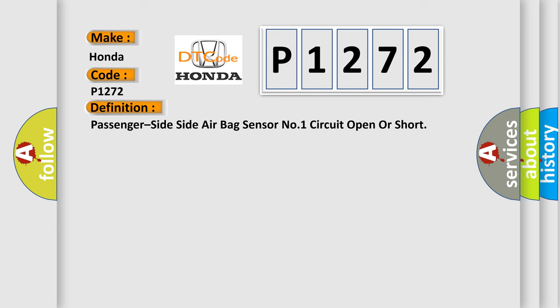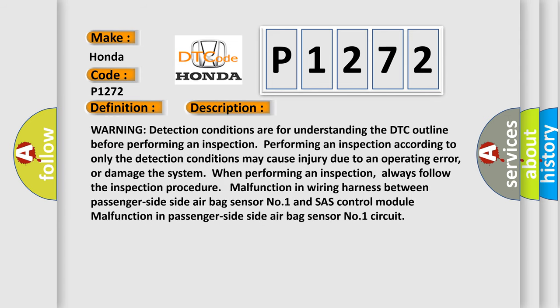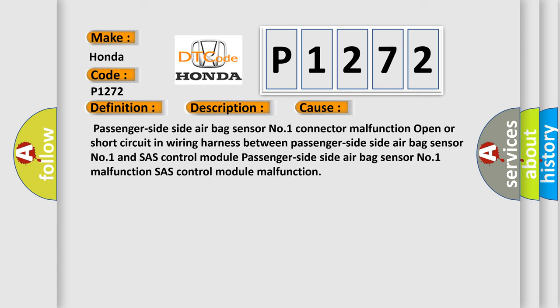This is a short description of this DTC code. Warning: detection conditions are for understanding the DTC outline before performing an inspection. Performing an inspection according to only the detection conditions may cause injury or damage the system. Always follow the inspection procedure. Common causes include: malfunction in wiring harness between passenger side airbag sensor number one and the SRS control module, malfunction in passenger side airbag sensor number one circuit, connector malfunction, open or short circuit in wiring harness, and SRS control module malfunction.